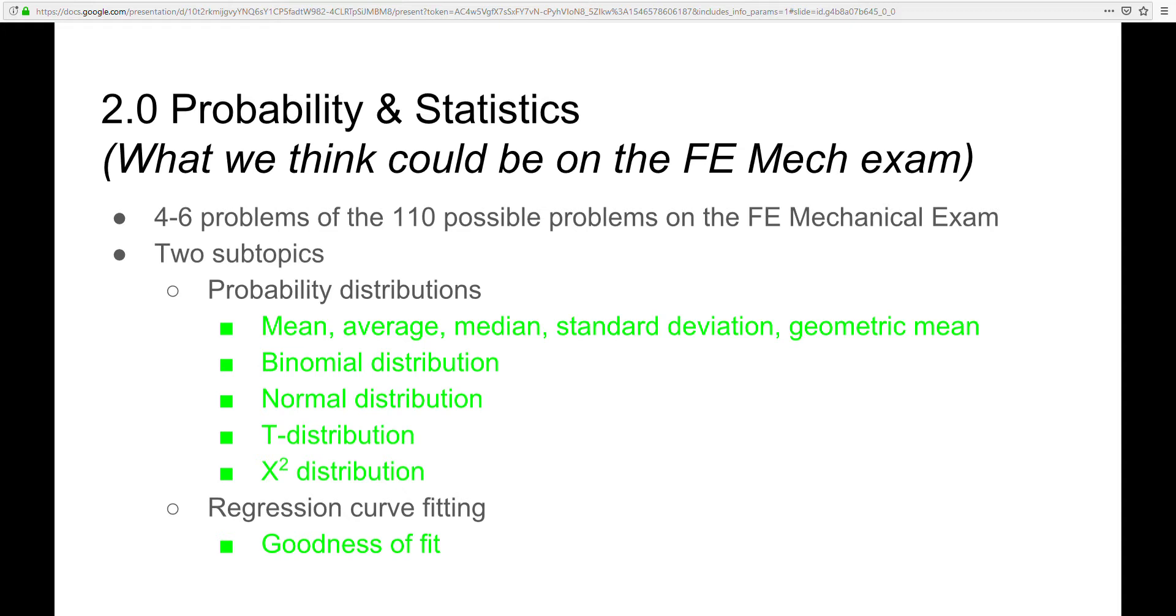And there are a lot of distributions, but there are only four mentioned in the reference handbook, which is binomial, normal, t, and the chi-squared distribution.